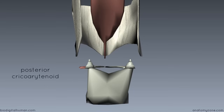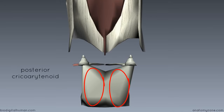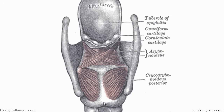The posterior cricoarytenoid muscles originate from the two depressions on either side of the posterior lamina of the cricoid cartilage. Switching to a posterior view of the larynx, you can see these muscles clearly. This is the broad lamina at the back of the cricoid cartilage. We've got the epiglottis up here with its mucosa, the aryepiglottic folds, and the cuneiform and corniculate cartilages suspended in that. The posterior cricoarytenoid muscles attach on the oval depressions on either side of the midline of the posterior surface of the cricoid cartilage.